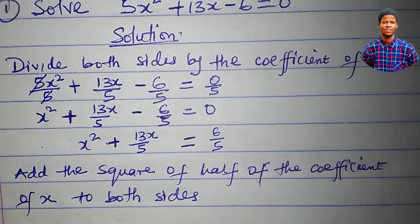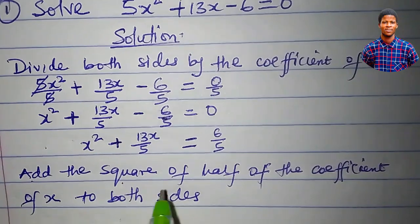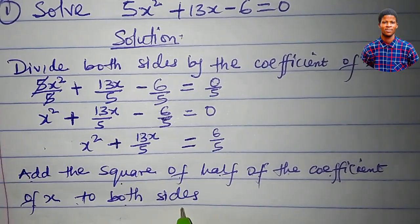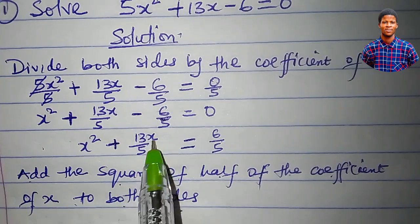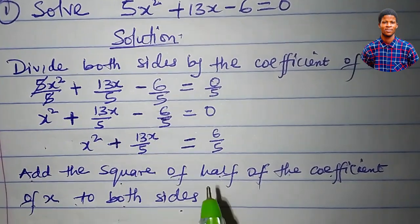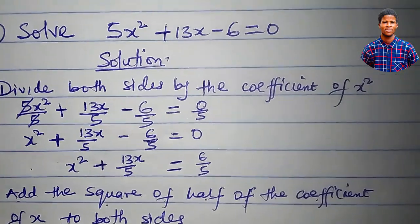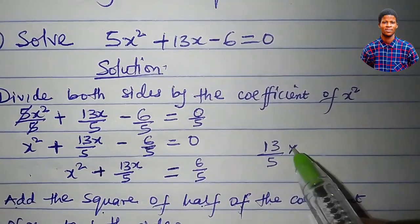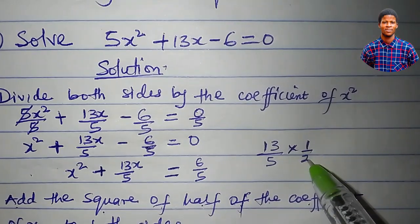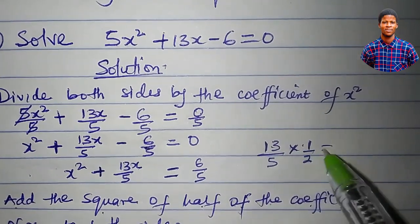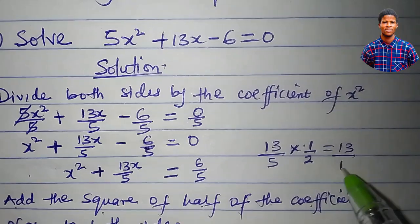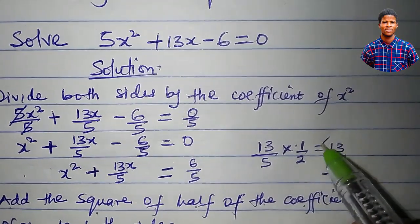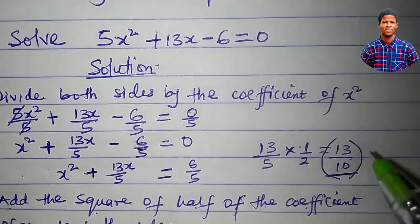What we'll do now is to add the square of half of the coefficient of x to both sides. The coefficient of x here is 13 over 5. So what is half of it? 13 over 5 times 1 over 2: 13 times 1 is 13, 5 times 2 is 10. So half of it is 13 over 10. The square of half is 13 over 10, all squared.